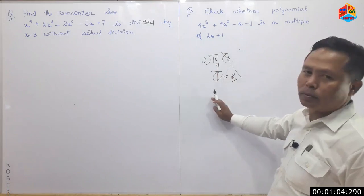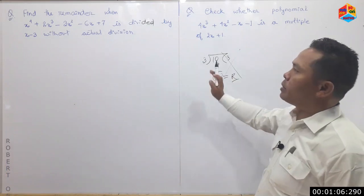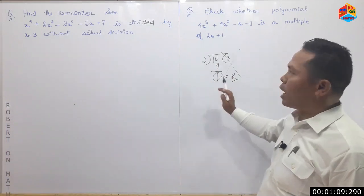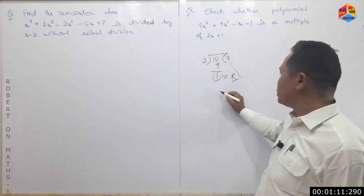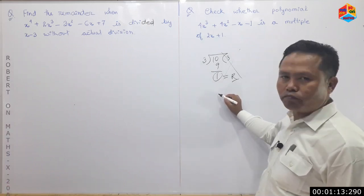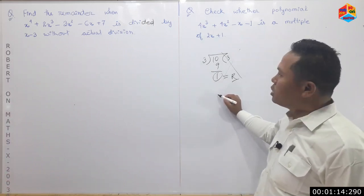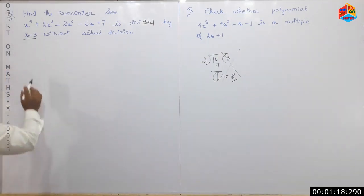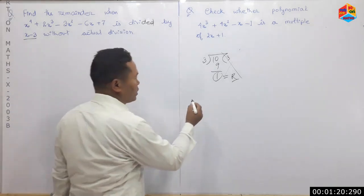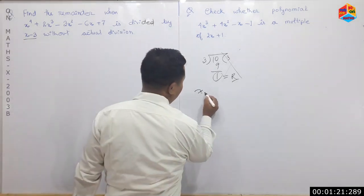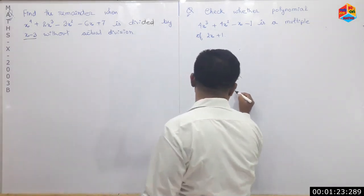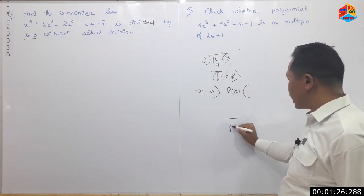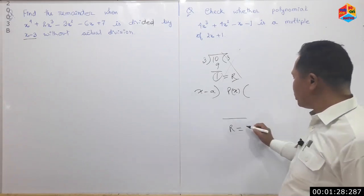This is the long division. Now let's see how we can do this. This is the linear polynomial. We are going to do this linear polynomial x minus a. Linear polynomial x minus a. We are going to divide the remainder.